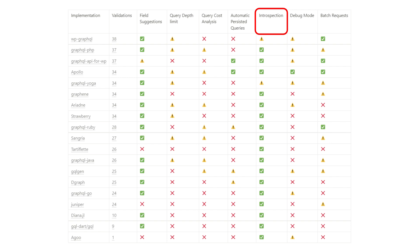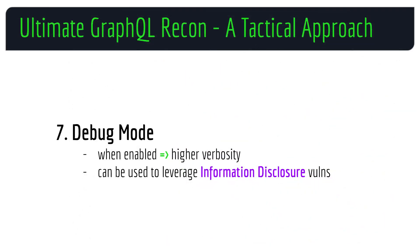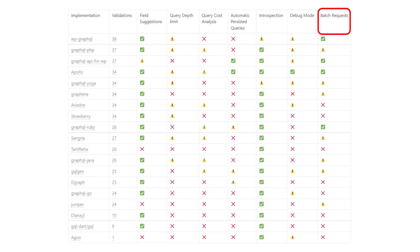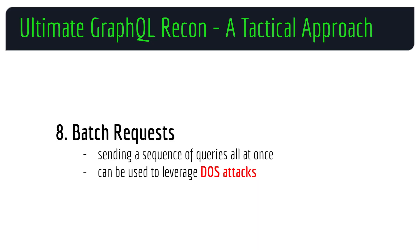Debug mode — this is exactly what you think it is. When enabled, it spits out a more verbose response which can lead to information disclosure issues. Lastly, batch requests — this enables sending a sequence of queries all at once, and this can be a vector for DOS attacks.